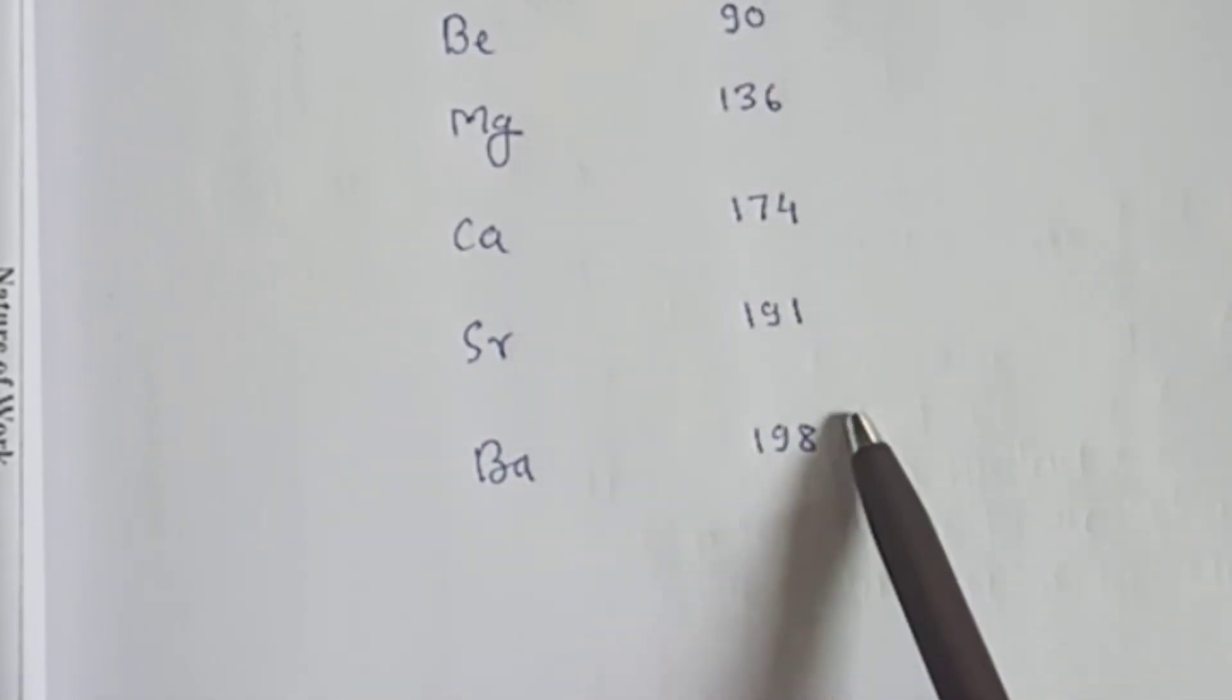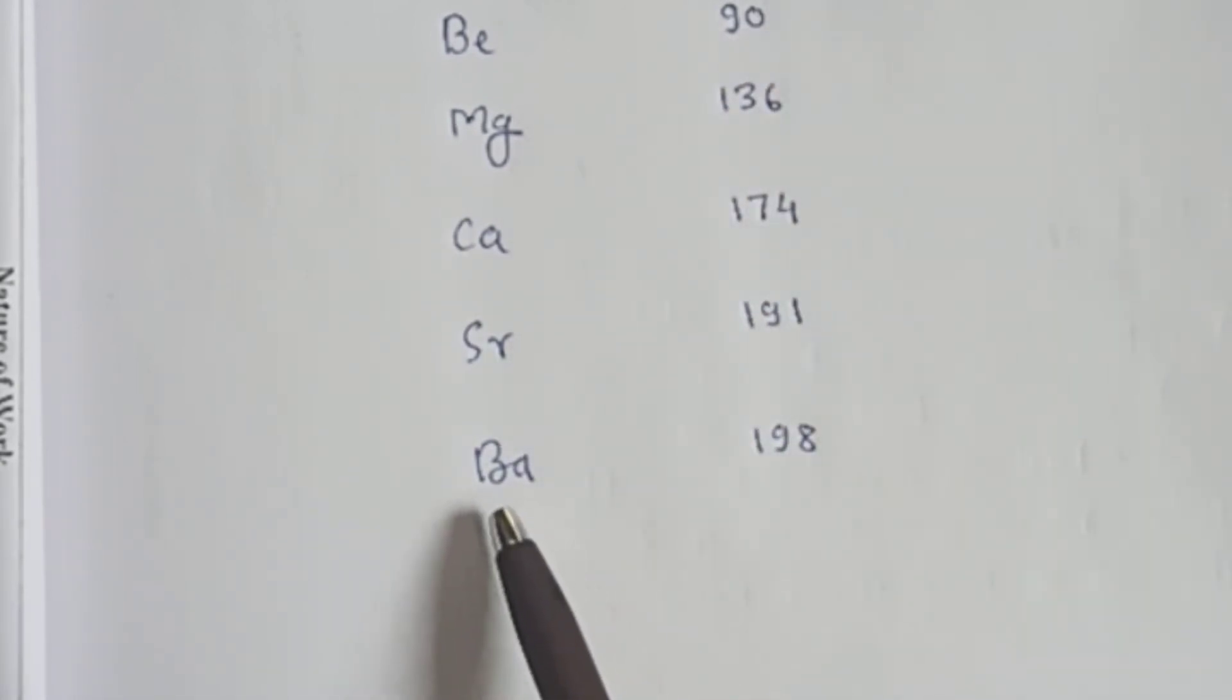So there is a consistent increase in the atomic size down the group. Barium is much bigger than beryllium. This is all about the variation of atomic and ionic radius across a period and down the group.